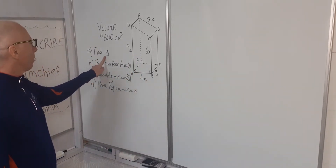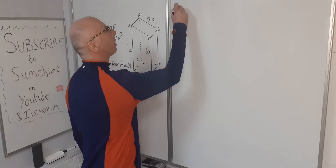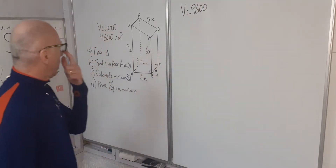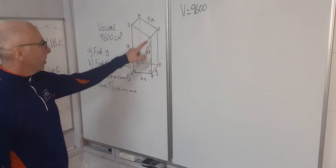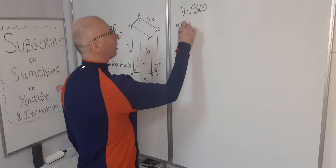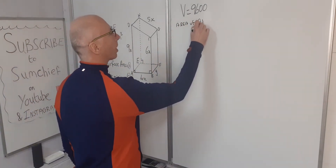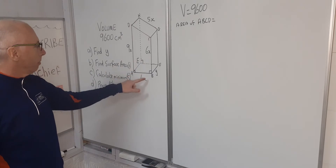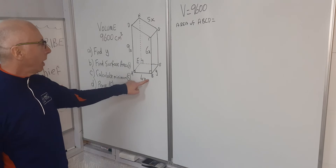To find y, we're given that the volume is 9600. So volume equals 9600. We want to find the area of the trapezium face ABCD. As this looks like a trapezium, we take the average of the two lengths of the parallel sides and multiply it by its height. That will give us the area of side ABCD.